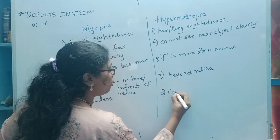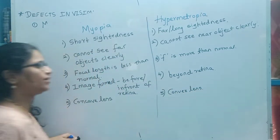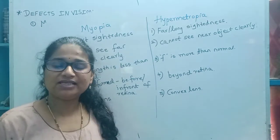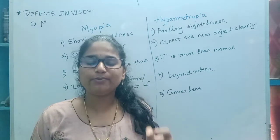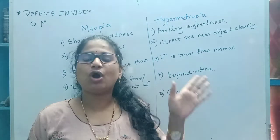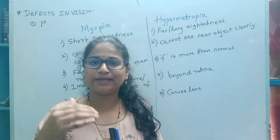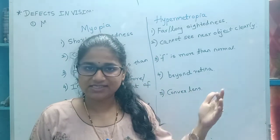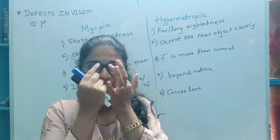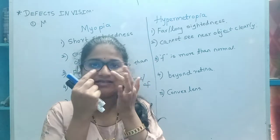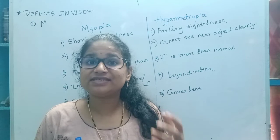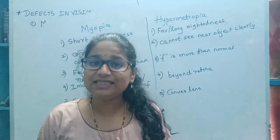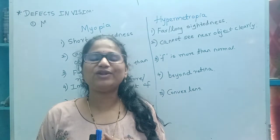In the upcoming sessions, we are going to discuss one more defect which is commonly seen in old age people, where they cannot see far objects clearly as well as nearer objects clearly. You might observe in old adults that their spectacles have certain marks or divisions — different lenses above and below. What kind of lenses they are using, what problem they are facing, and the causes — all of that we will discuss in the upcoming session. Until then, take care of your eyes. Have a nice day.